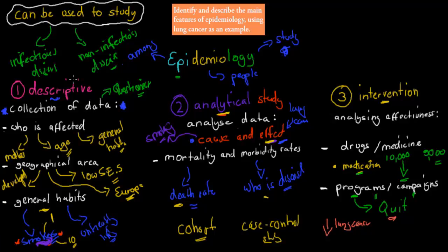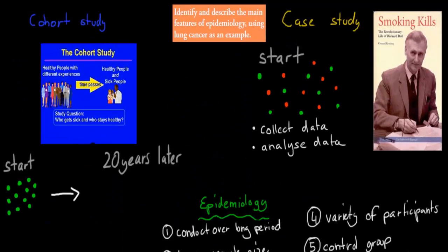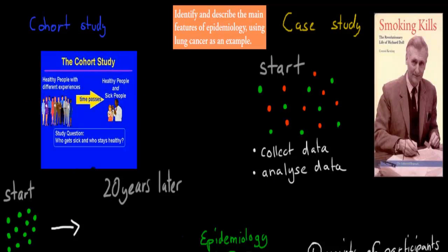So those three studies — you don't need to know too much detail about them. You need to know that they're descriptive, analytical, and intervention, and the key differences between the three. The next part is the most important: we've got two different types of analytical studies — the cohort study and the case control study.